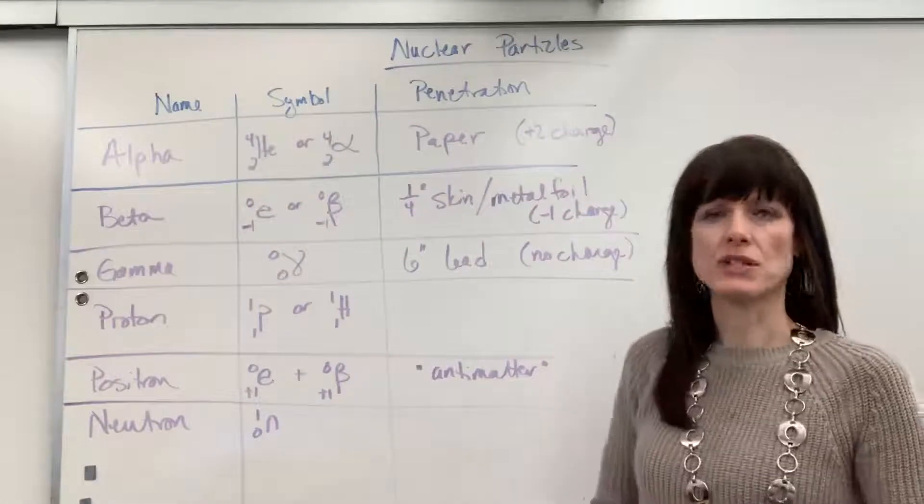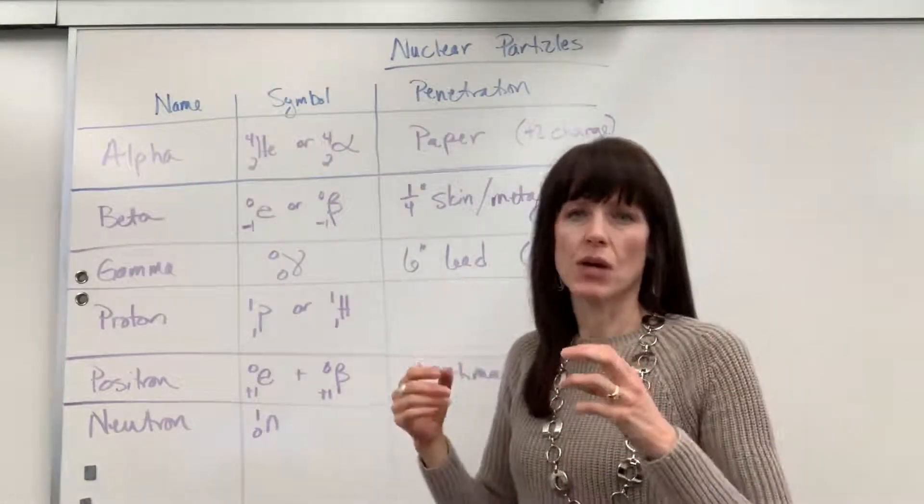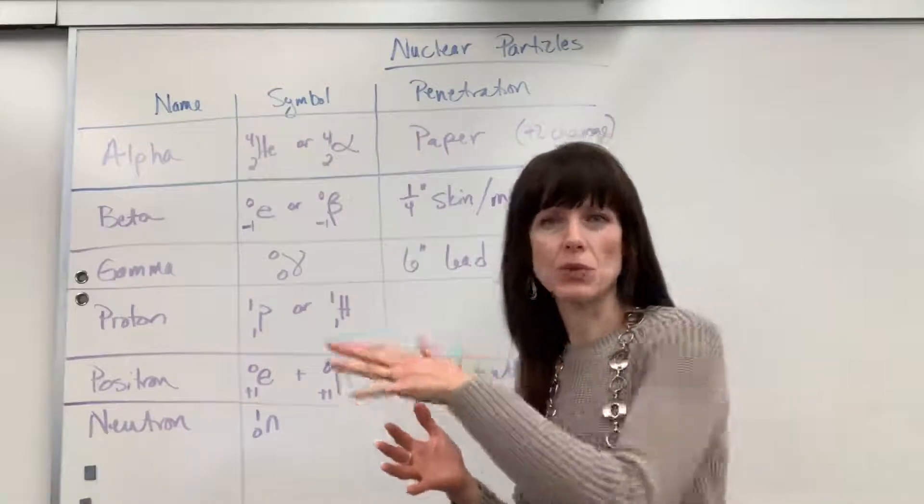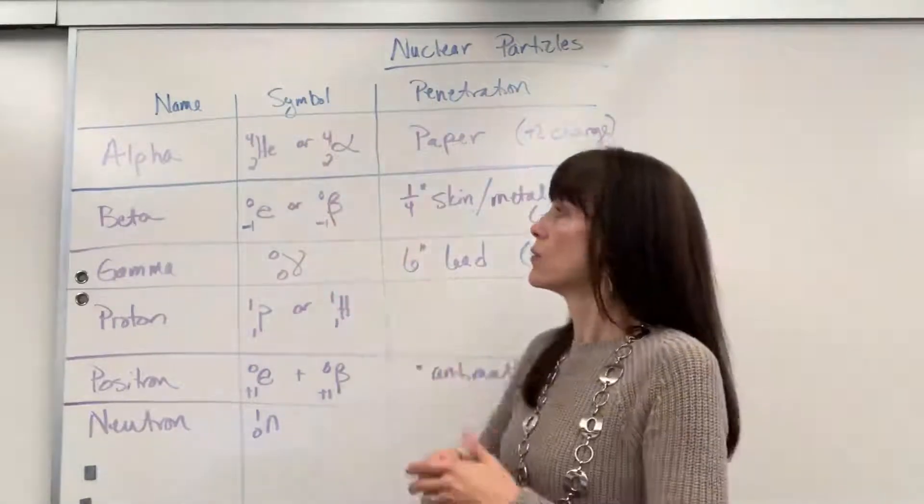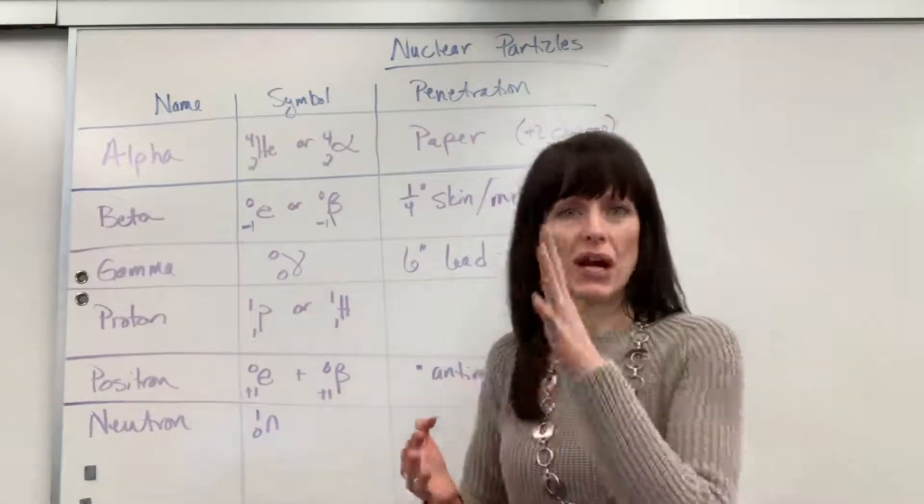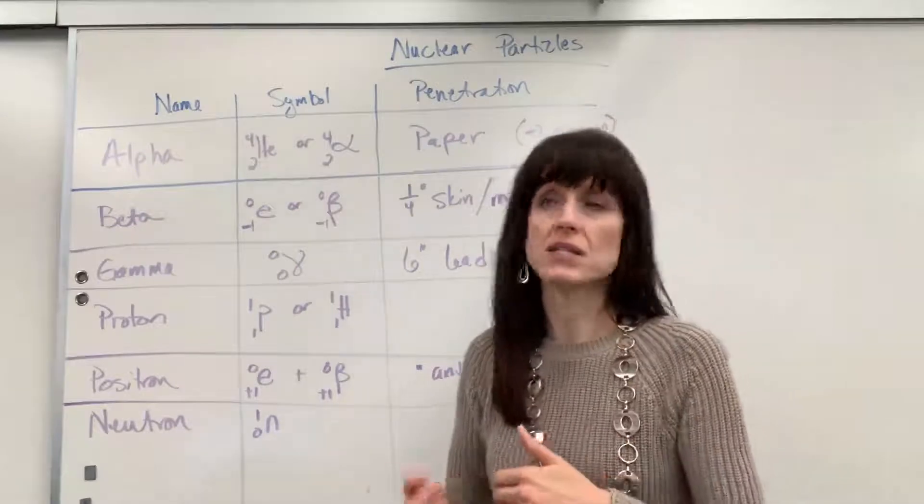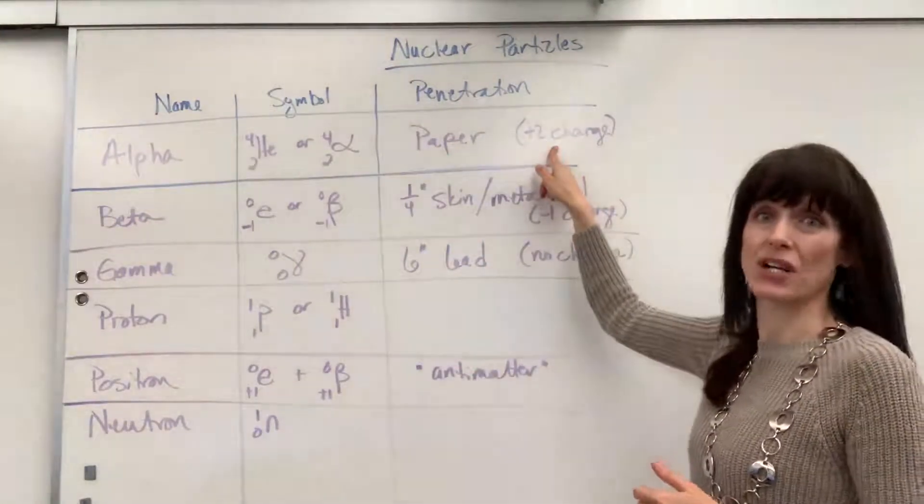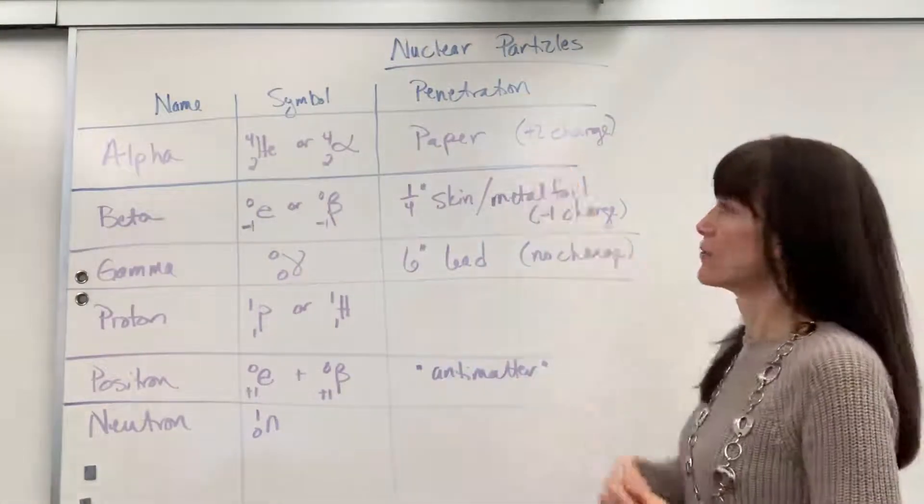Sometimes you'll see questions where it will show a magnet with some rays. I don't want to know which way an alpha ray will bend. Well, it will be attracted to negative and it will deflect from positive because of that positive charge, those two plus charges from the protons.